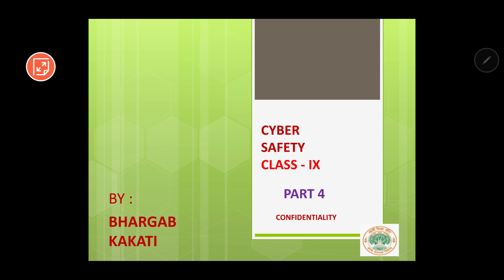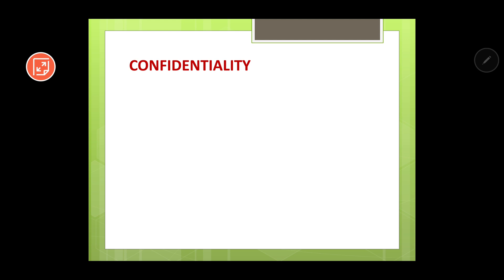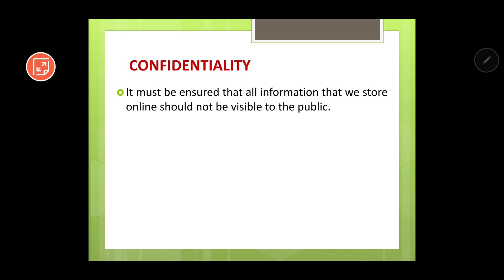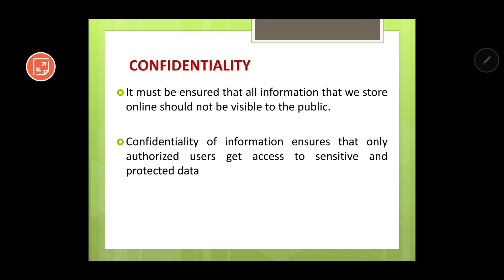Let us try to understand what confidentiality is. All of us use the internet in some way or the other. Most of you have various social media accounts like Twitter, Facebook, Instagram. There are certain things which we want to be visible to everyone — to the public. But there are certain things we do not want visible, like bank account details, our address, our phone number. Confidentiality of information ensures that only authorized users get access to sensitive and protected data.